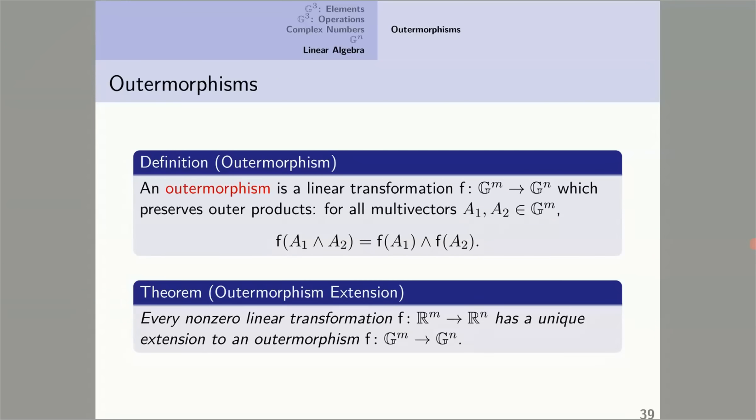Importantly, every non-zero linear transformation from R^m to R^n has a unique extension to an automorphism from G^m to G^n.